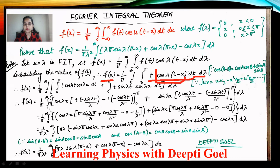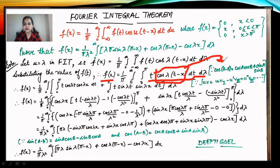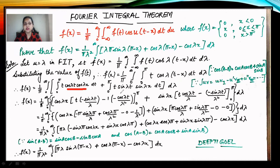Now the term cos(λt − λx) is expanded using the identity cos(a−b) = cos a cos b + sin a sin b. So cos(λt − λx) = cos(λt)cos(λx) + sin(λt)sin(λx). We split the integral into two parts: (1/π) ∫₀^∞ [∫₀^π t cos(λt)cos(λx) dt + ∫₀^π t sin(λt)sin(λx) dt] dλ.